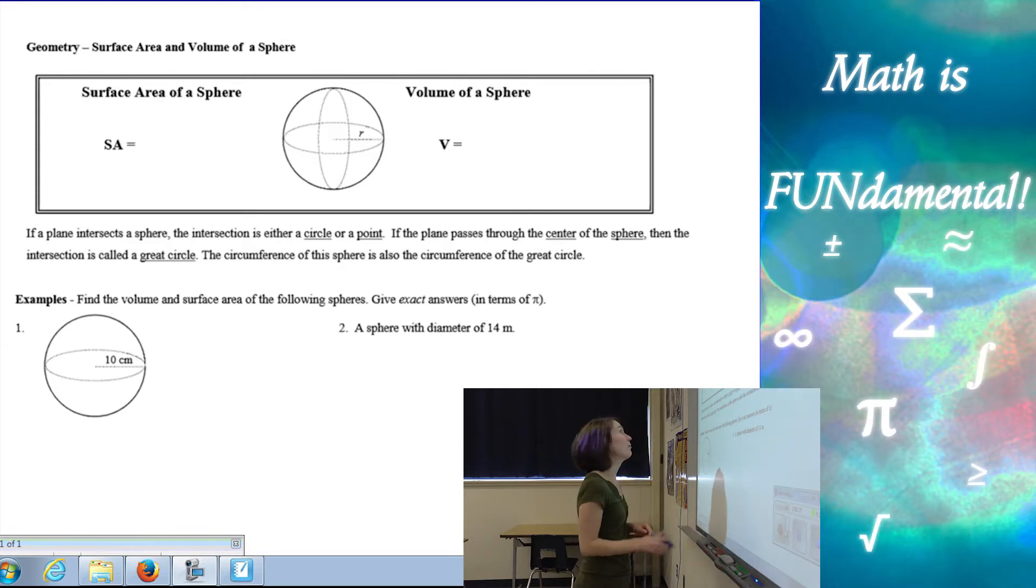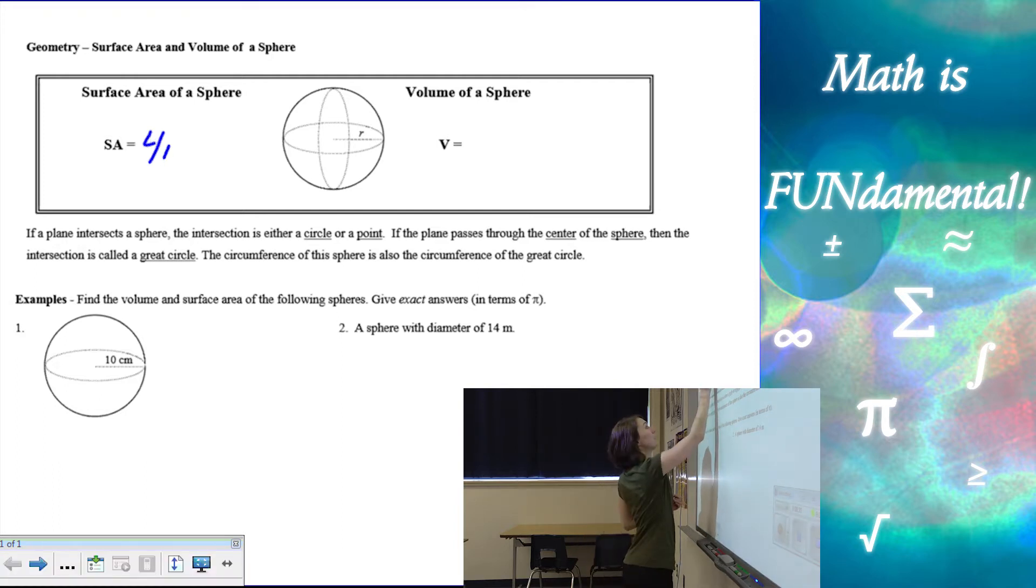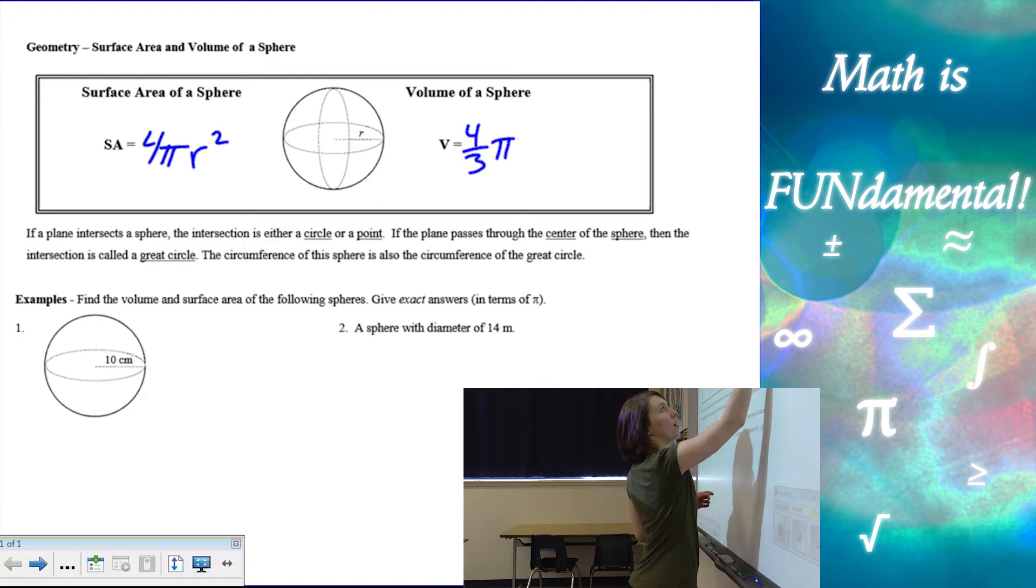So to start, we have surface area of a sphere. The formula is going to be 4 times pi r squared, kind of like pi r squared area of a circle, but there's 4 of them. And volume of a sphere is 4 thirds pi r cubed.